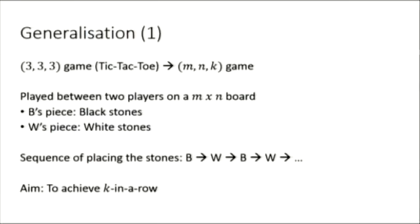Here's the first step of our generalization, by introducing the parameters m, n, and k. Now, the game is played on an m times n board, with the aim of achieving a k in a row. Note that, in the later part of the presentation, we'll use black stones for player 1 and white stones for player 2. So, we may call them black and white, respectively.